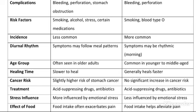Next is age group — kaunse age groups mein yeh jyada hota hai. Gastric ulcer older adults mein jyada hota hai, aur jo duodenal ulcer hai woh younger persons aur middle-aged persons mein jyada hota hai.